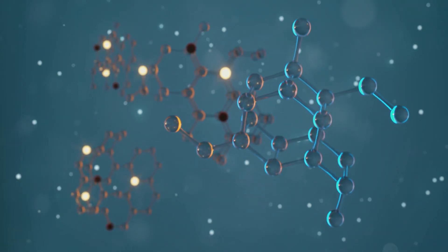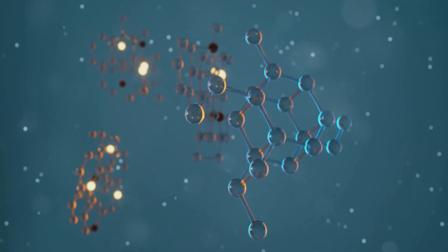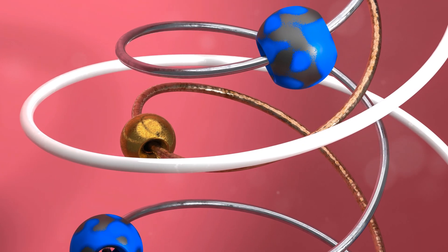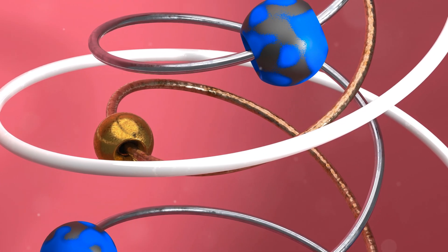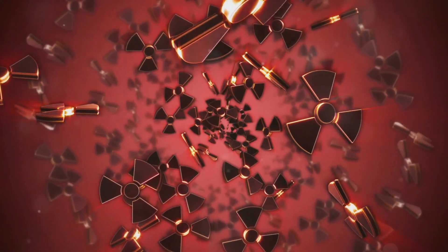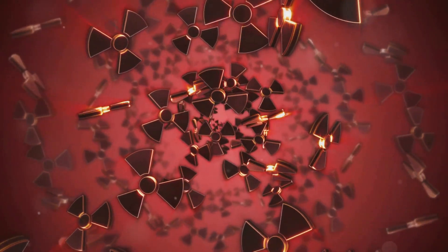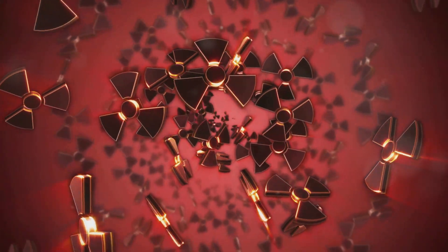In a one-dimensional world, the atom, the fundamental building block of matter, would be reduced to a single point lacking any spatial extent. It would exist solely as a location on a line. This point-like atom would possess properties like mass and charge.